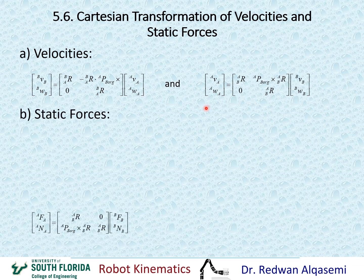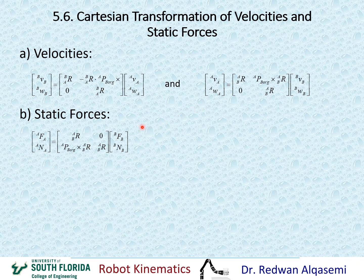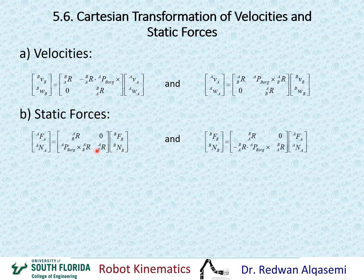In the case of static forces, we can similarly think of this as an instantaneous transformation. Using the same equations, we generate a transformation matrix. If we are given forces and moments of B relative to B and need to find forces and moments of A relative to A, we multiply by this 6x6 transformation matrix applied to a 6x1 vector. The opposite case — given forces in A, finding forces in B — requires transposing or inverting the transformation matrix.